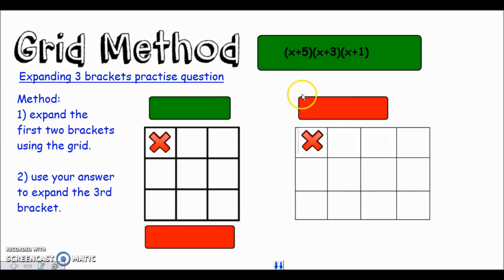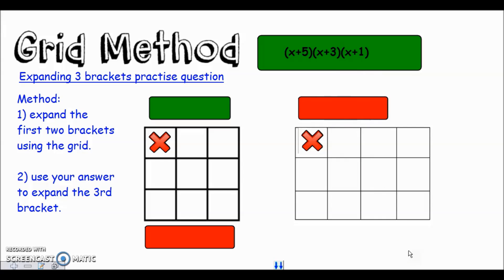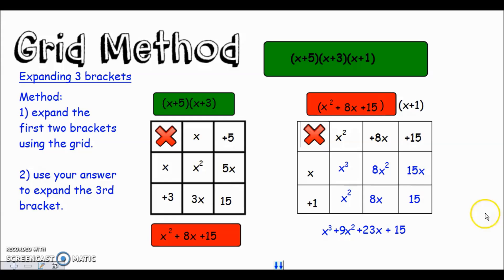Here's a practice question with three brackets. Follow the method: do the first two brackets and put the result in the first grid, then do the final multiplication in the second grid. Pause the video and have a go. Okay, hopefully you've had a go at that - let's go through the solution.